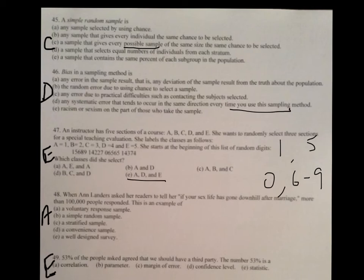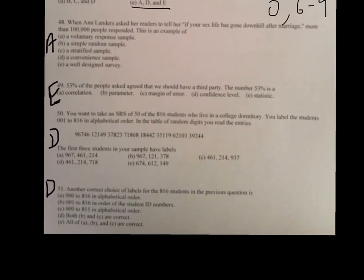And number 48, when Landers asked, this is the same type of problem we asked. It's a voluntary response, so therefore A is the answer. And then finally, the last three problems. 53% of the people asked, agreed that we should have a third party. The number 53 is the statistic. That's the statistic that they give us.